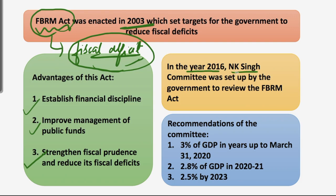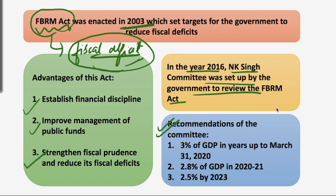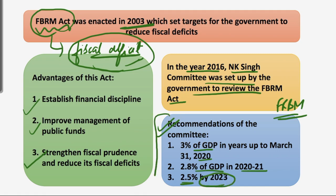In the year 2016, the NK Singh Committee was set up by the government to review the FRBM Act, tasked with reviewing the performance of the Act and suggesting necessary changes. The committee recommended that the government target a fiscal deficit of 3% of GDP up to March 31st 2020, subsequently cut to 2.8% of GDP in 2020–21, and 2.5% by the year 2023.